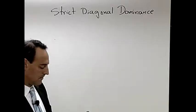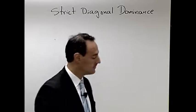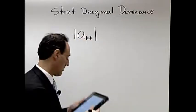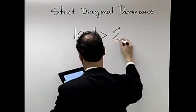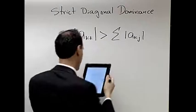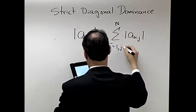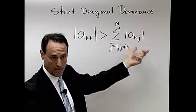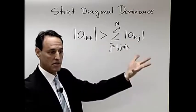A matrix is strictly diagonal dominant if the absolute value of every diagonal term is greater than (not greater than or equal to, but greater than) the sum of the rest of the terms in that row. You walk across all the columns except for the diagonal term, add up all their absolute values, and if for every diagonal element this holds, it's strictly diagonal dominant.